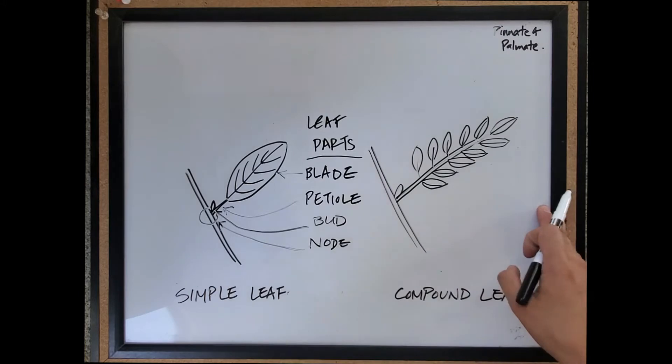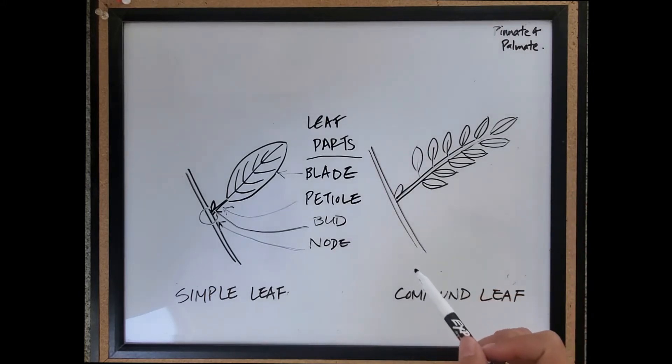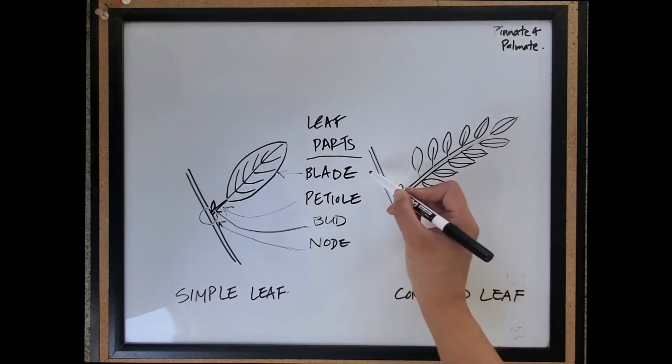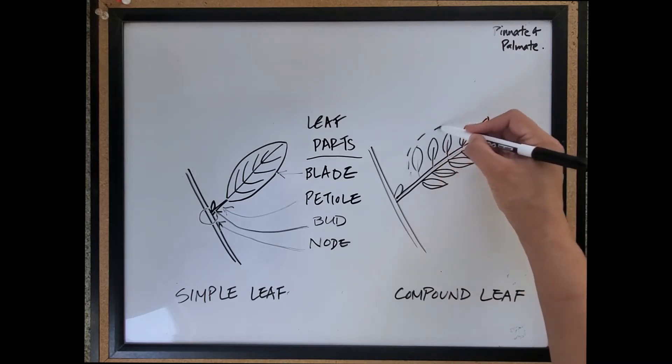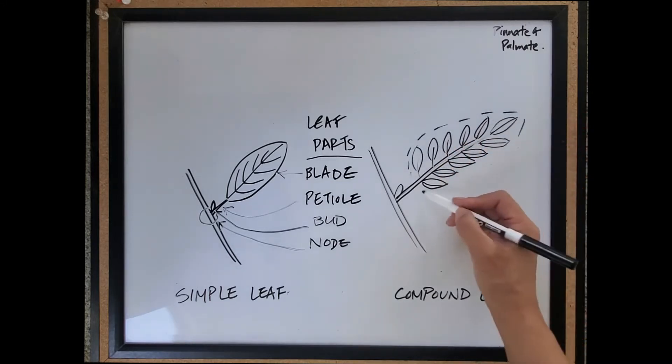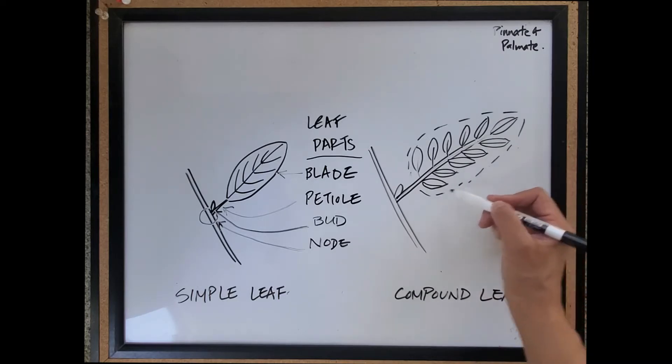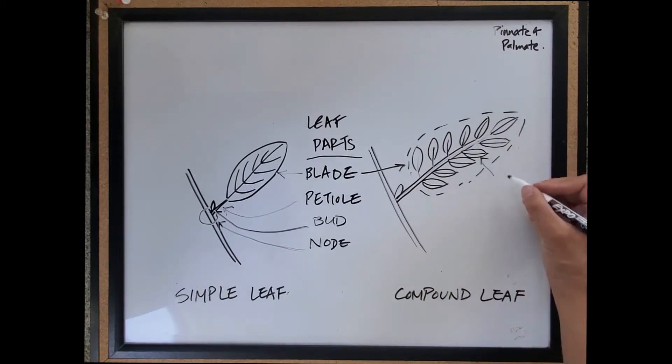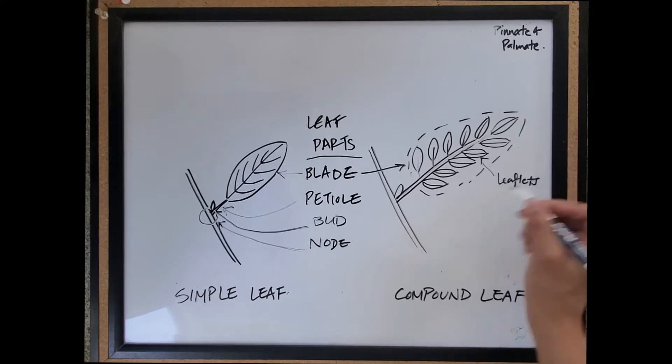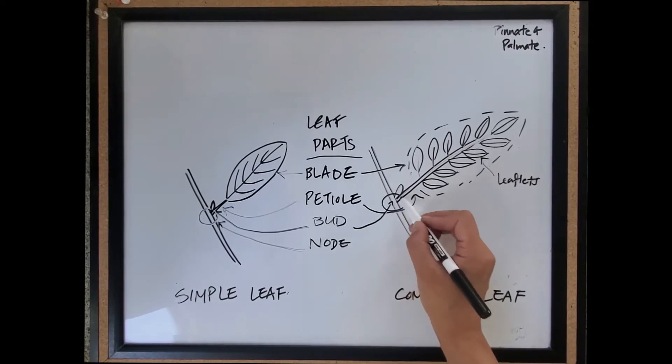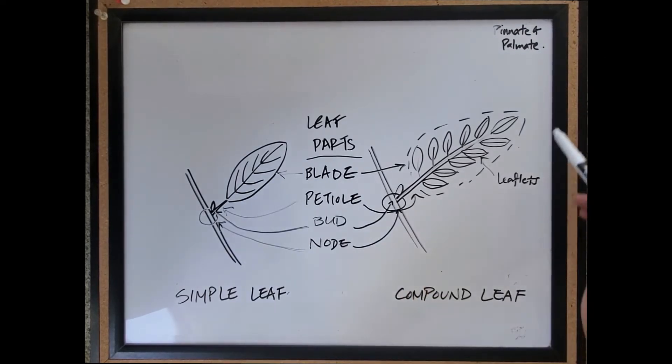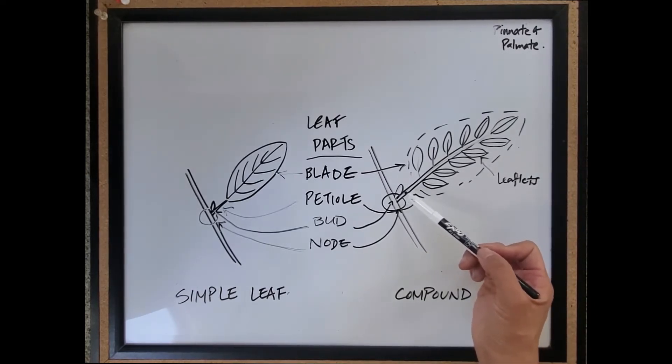The difference with a compound leaf is that the blade has become divided, it's not a single piece. If you imagine this being a simple leaf at some point in the past, this would have been the blade. But now this blade is basically all of these little leaflets. Individually these are called leaflets. You still have the petiole, the bud, and the node. If you're trying to tell the difference between a compound leaf and a simple leaf, make sure you're looking for that bud that's going to be at the node.